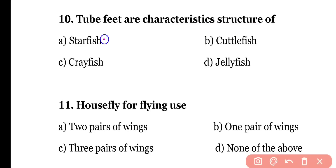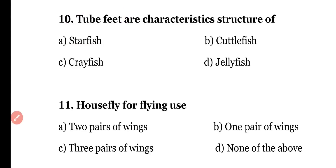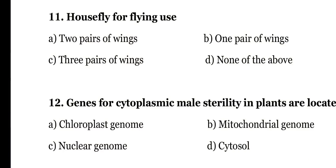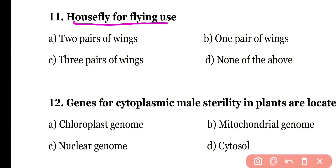Question number ten: tube feet is the characteristic structure of (a) starfish, (b) cuttlefish, (c) crayfish, or (d) jellyfish. The correct answer is option A — starfish, which is an echinoderm, has tube feet as its characteristic locomotory organ.